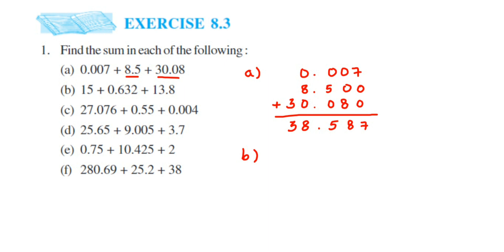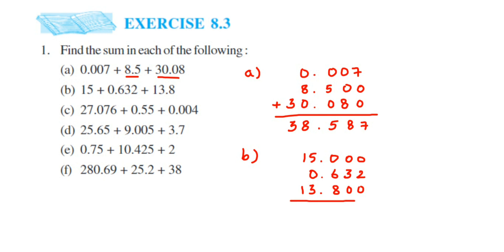Second question — same thing. 15 is a whole number, so it will be like 15.0. The next one is 0.632, so line up with the decimal. The next one is 13.8 — decimal point here, 13 on the left side and 8 here. Empty places you can just put 0. Now add it: 2 here, then 6 plus 8 is 14, so 4 comes here and 1 carries. Decimal point, then 5 plus 3 is 8, 8 plus 1 carry is 9, and 1 plus 1 is 2. So the answer is 29.432.